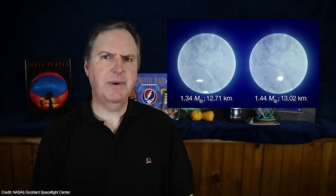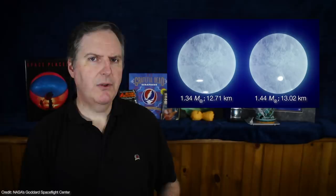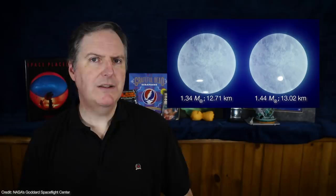But everything else about the pulsar, its timing behavior, its gamma-ray output, its x-ray properties, and radio pulsations are all typical of millisecond pulsars. And that suggests that what we're seeing in J0030 might not be all that unusual for millisecond pulsars, and that has some very interesting implications.